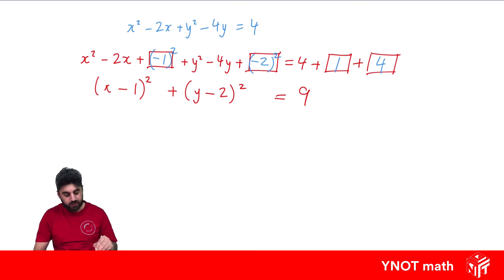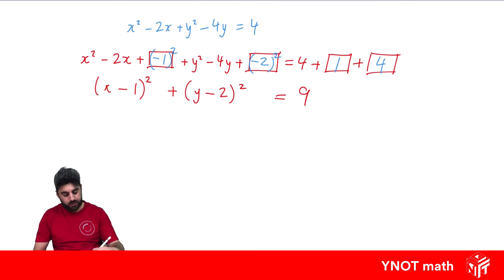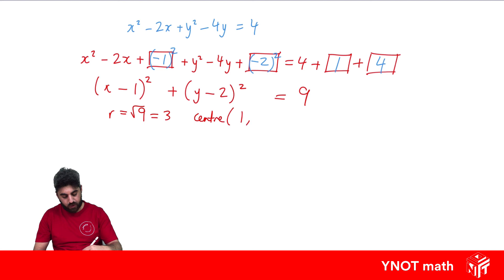Now we have it in the correct form: x minus 1 squared plus y minus 2 squared equals 9. We can see it matches the standard form with a number squared plus a number squared equal to the radius squared. So the radius is the square root of 9, which is 3, and the center is at (1, 2).